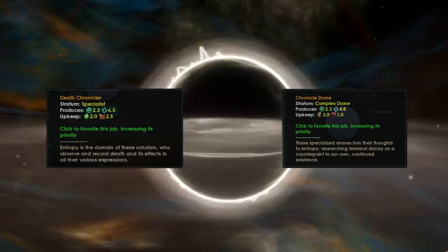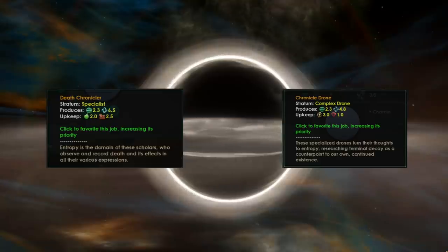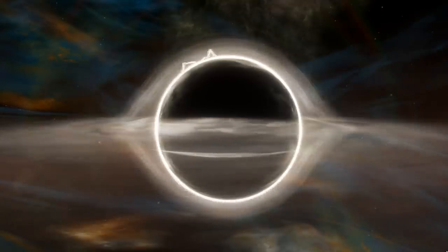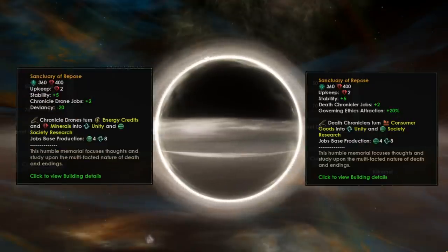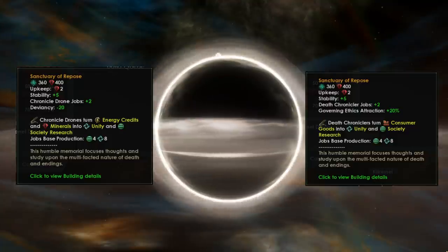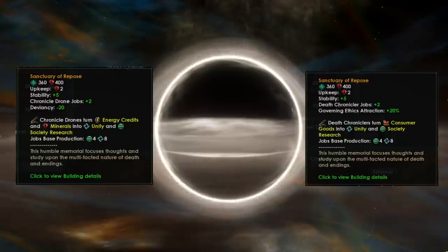On top of that then you get some governing ethics attraction to your own governing ethics which is nice. And if you're a robot or a hive mind then it reduces deviancy by 20. But here's the kicker, it adds something that is very difficult to get within the game and that is stability. It adds five stability for the first tier of the building which is rather crazy. This is only the first tier of the building and it keeps on ramping.